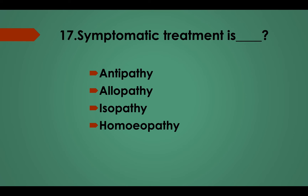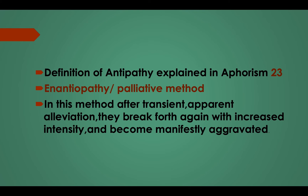Question No. 17: Symptomatic treatment is: Option A, Antipathy; Option B, Allopathy; Option C, Isopathy; Option D, Homeopathy. Answer: Option A, Antipathy. Definition of Antipathy explained in Aphorism 23 — also known as Enantiopathy or Palliative method. After transient and apparent alleviation, symptoms break forth again with increased intensity and become manifestly aggravated.